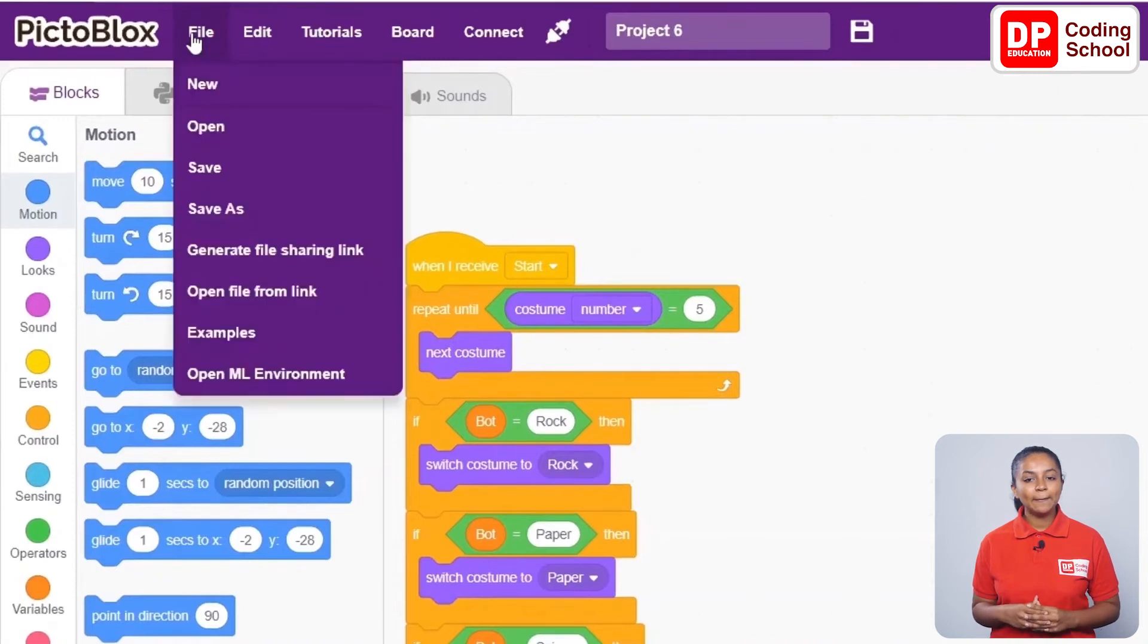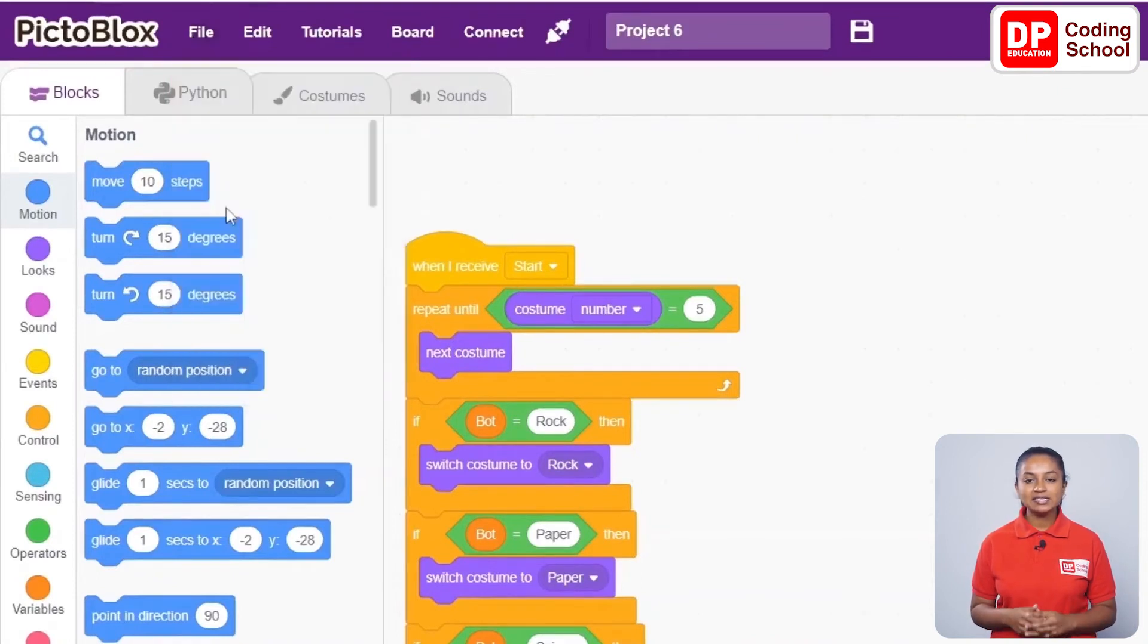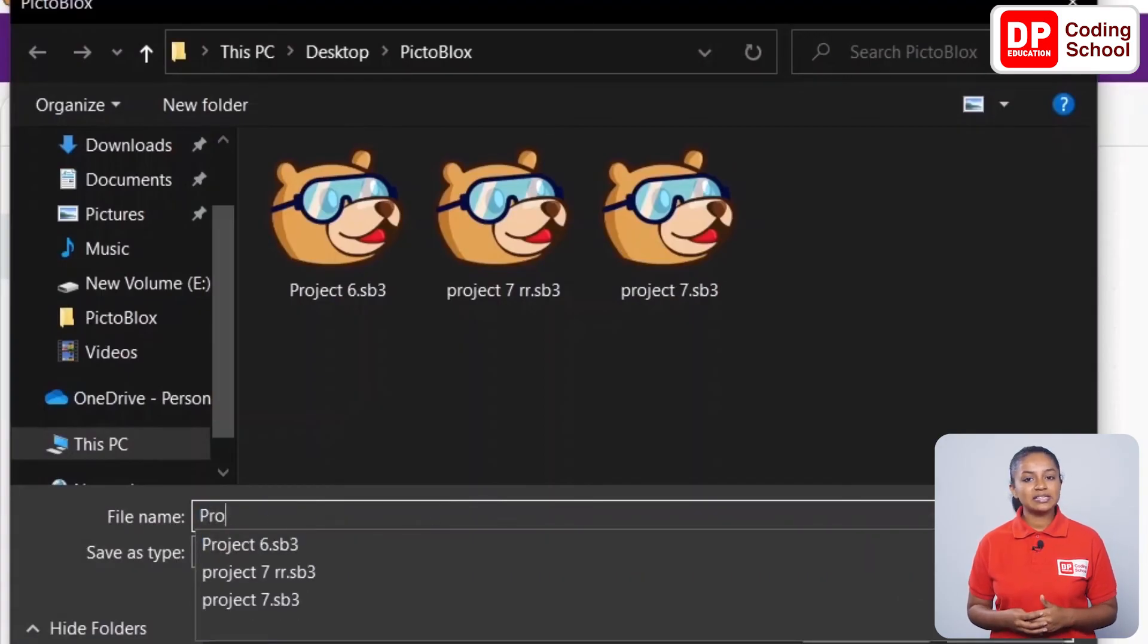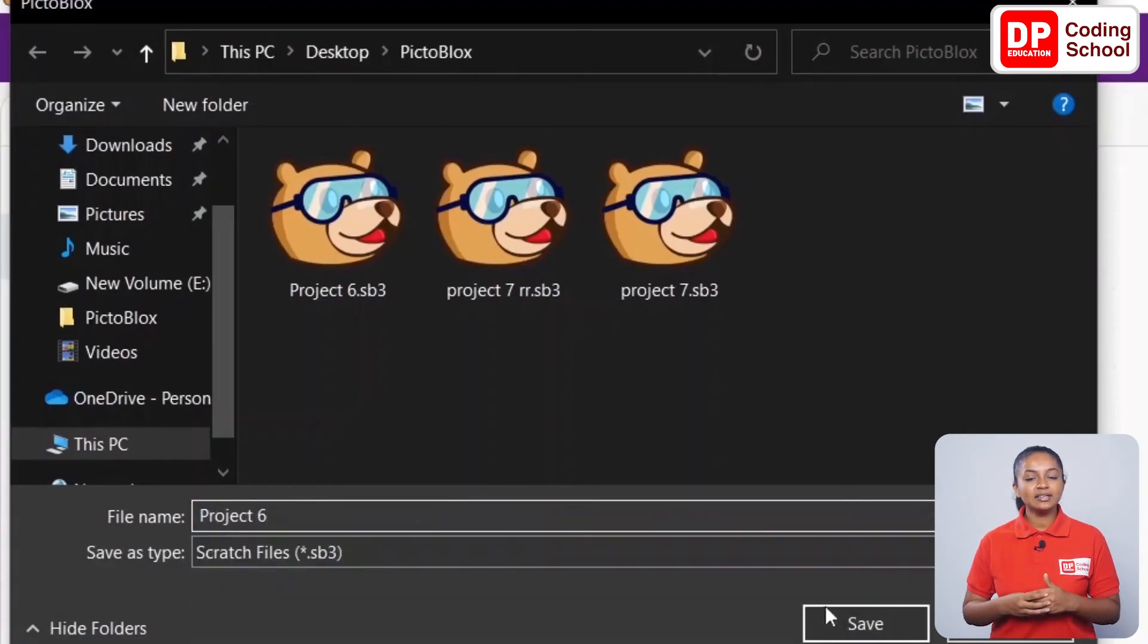I click on the file in the upper left corner of the interface and select save as. Now from here, let's browse the PictoBlox project folder that we created on the desktop. The file name is given as project 6, and click on save.